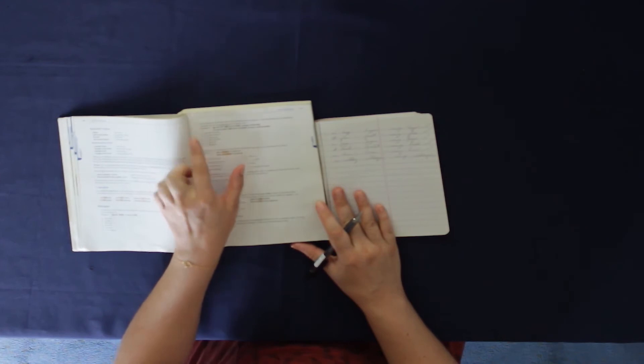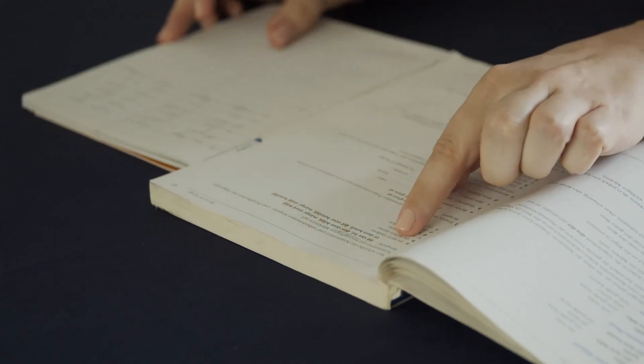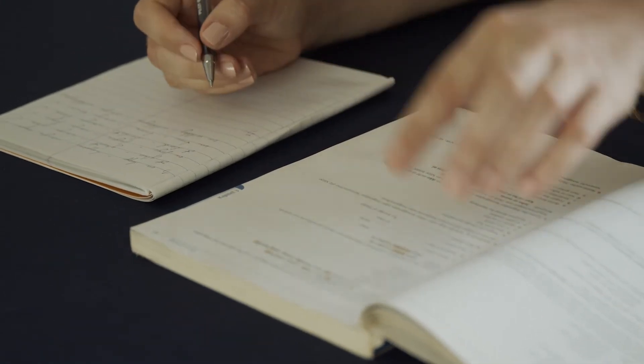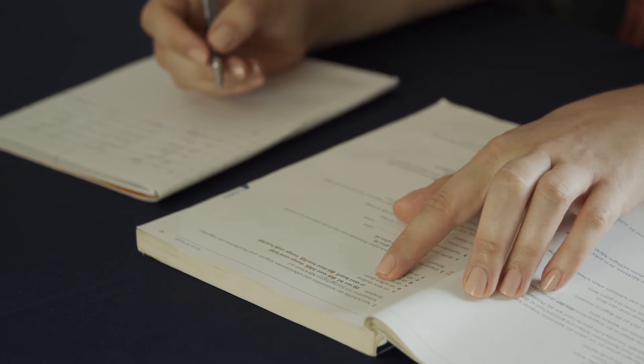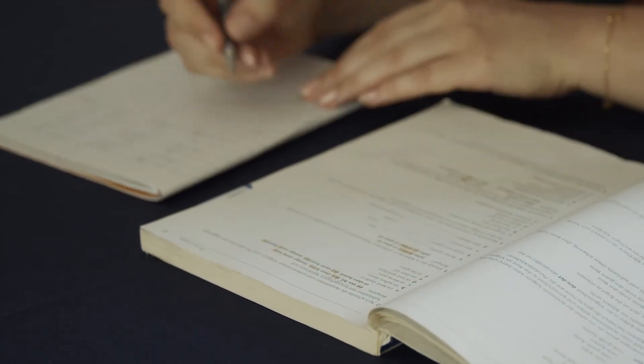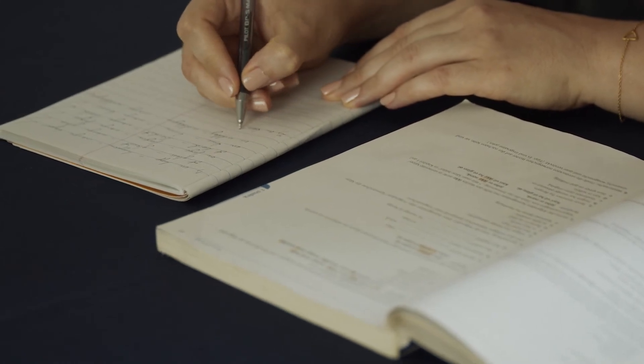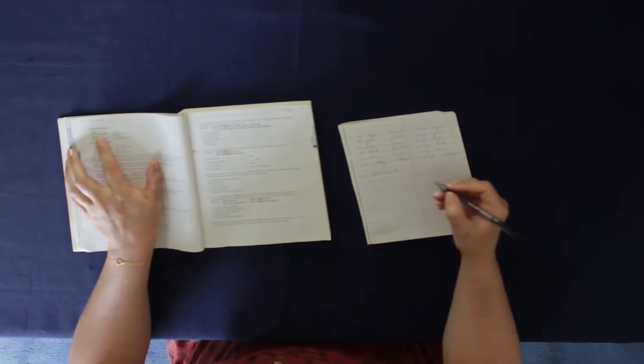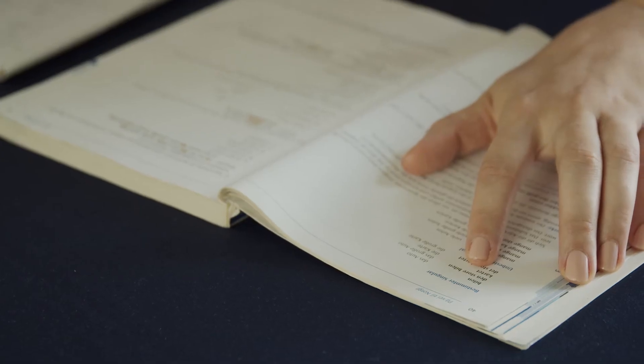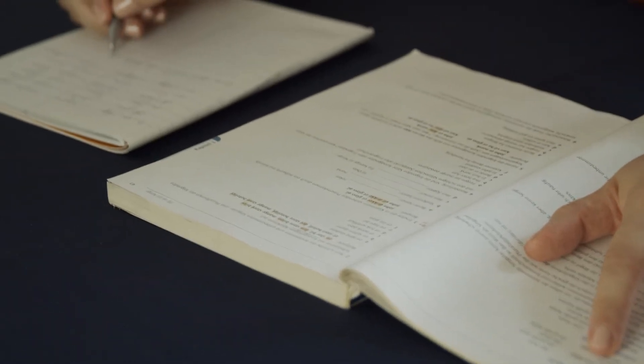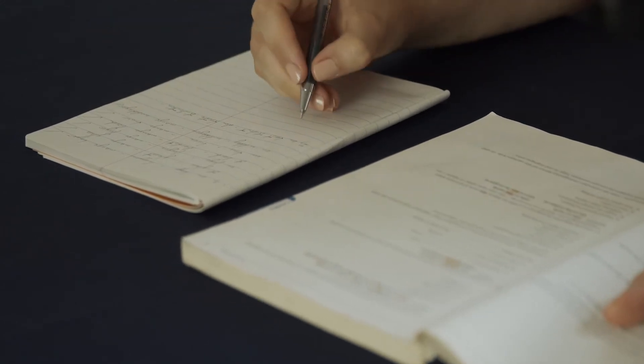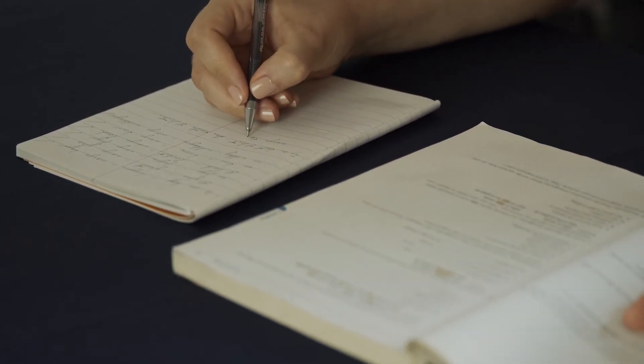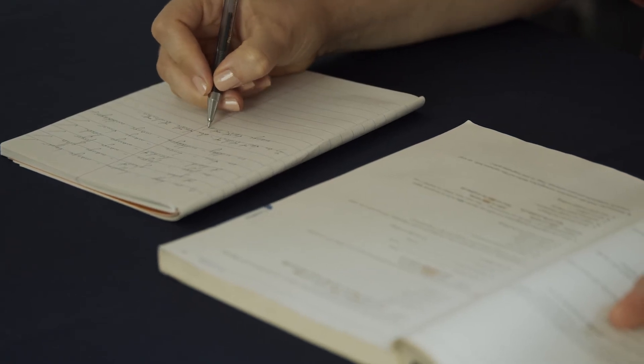Let's try the second one. This one works with adjectives. So let's see if I remember everything. First one, en tørst student, a thirsty student. So that should become...